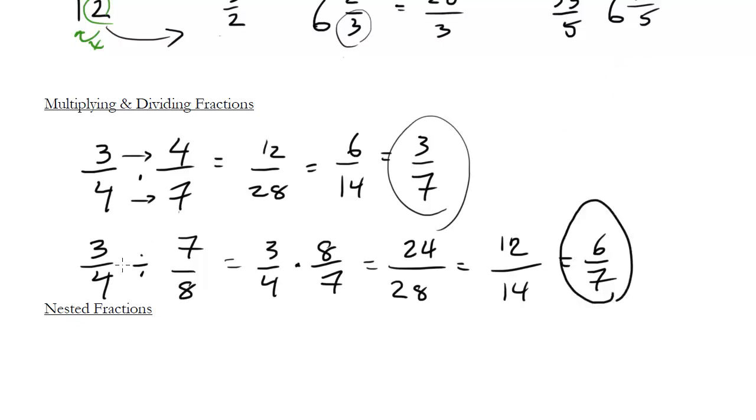Notice for this one, the answer increases from the original thing we're dividing. So 6 sevenths is bigger than 3 fourths, but note it's actually smaller than 7 eighths, but that's not really a major thing. Just remember that when you multiply fractions, you get a smaller number. When you divide fractions, you get a bigger number.